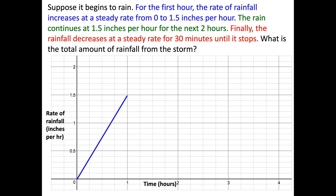So here's the first part. So the first hour, the rain falls and is increasing at that steady rate from zero to 1.5 inches. So you can see it's a constant. They mean by steady rate, so it's linear. Now, the rain continues at 1.5 inches per hour for the next two hours. Well, that means it's constant for two hours. And finally, the rain decreases at a steady rate for 30 minutes until it stops. So again, steady rate is another way of saying constant rate and for 30 minutes until it stops.